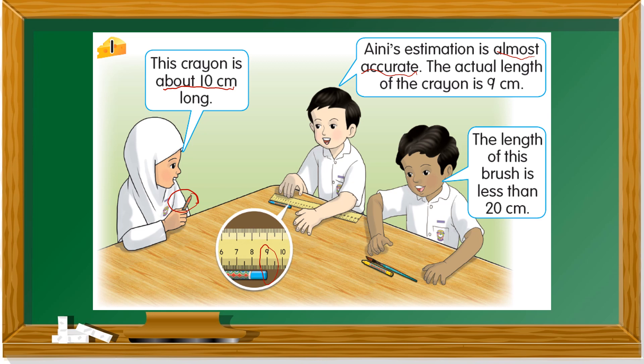The length of this brush is less than 20 cm. He doesn't have a ruler but he used the crayon to estimate. Because the crayon is 9 cm, if there's 2 crayons it'll be 18. You look at the brush — it's definitely shorter than 2 crayons. So it's less than 20 cm.